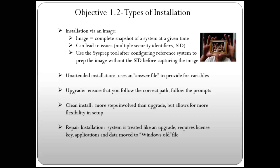You can do an unattended installation using an answer file that provides the answers to most variables. A partially unattended installation has the answer file answer some questions while the user answers others — you'll most often see that in business environments. An upgrade keeps your existing system as discussed. A clean install means taking a bare box and putting the operating system on it. A repair installation is treated like an upgrade, requires your license key again, and should only be done as a last resort — all applications and data get moved to Windows.old.